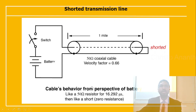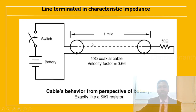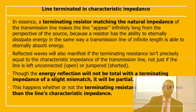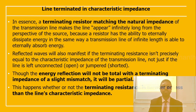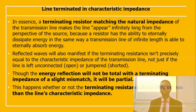For a 50-ohm coaxial cable with velocity factor 0.66 terminated in its characteristic impedance, the cable's behavior from the battery's perspective is exactly like a 50-ohm resistor continuously. A terminating resistor matching the natural impedance of the transmission line makes the line appear infinitely long from the perspective of the source, because the resistor eternally dissipates energy just as an infinite transmission line eternally absorbs energy.